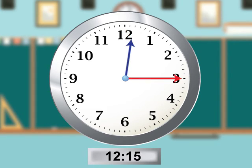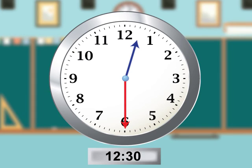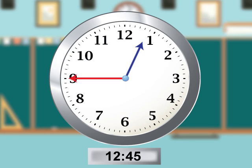This is 12:15. The hour hand is a bit past 12 and the minute hand points to 3. This is 12:30. The hour hand is between 12 and 1 and the minute hand points to 6. This is 12:45. The hour hand is closer to 1 and the minute hand points to 9.